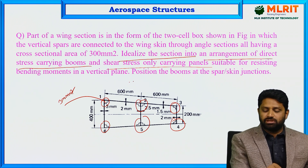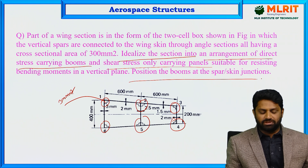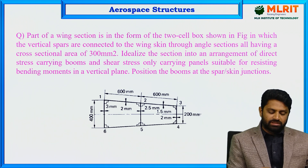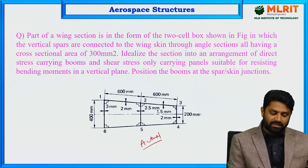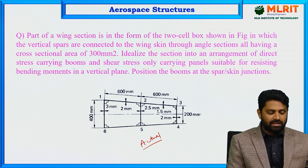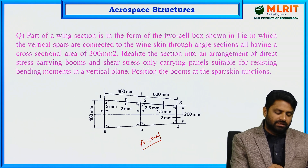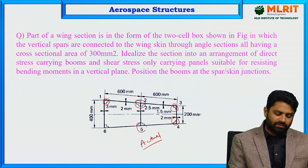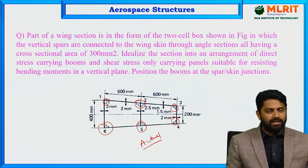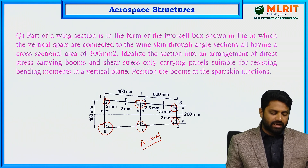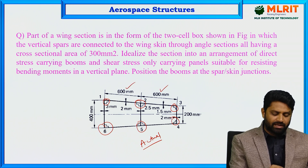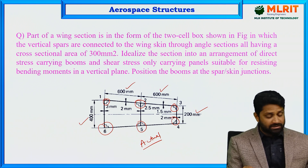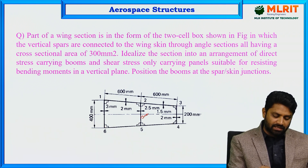The booms are to be positioned at the spar or skin junctions. Angle sections are attached at positions 1, 2, 3, 4, 5, and 6. The width of the section is 600 mm; the depth is 400 mm on one side and 200 mm on the other. Following linearity, the intermediate depth can be assumed as 300 mm. Various panel thicknesses are also given.